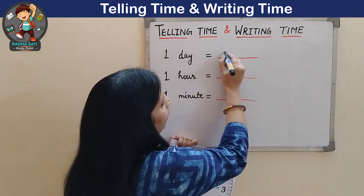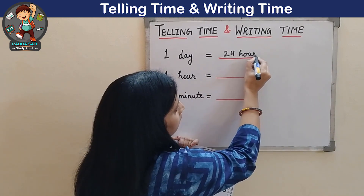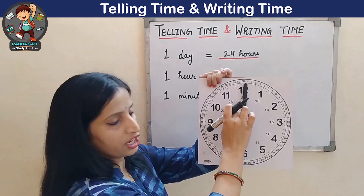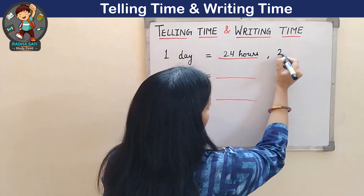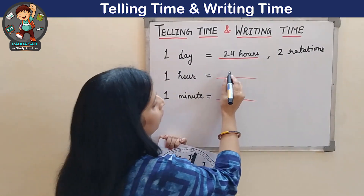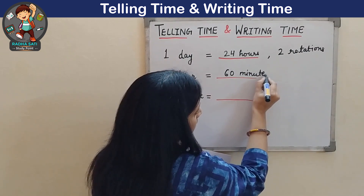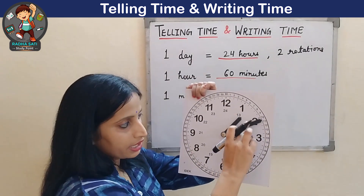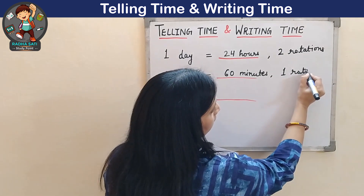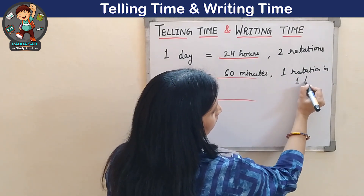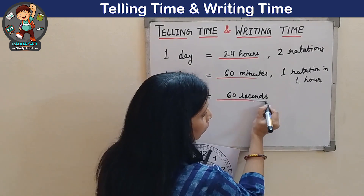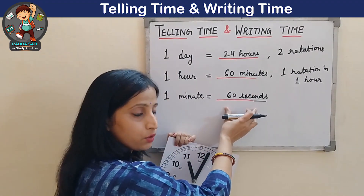One day is equal to 24 hours, which means the hour hand will make 2 complete rotations in a day. One hour is equal to 60 minutes, which means the minute hand will complete 1 rotation in 1 hour. And 1 minute is equal to 60 seconds — the second hand moves faster than the other two hands and makes 1 rotation in 1 minute.